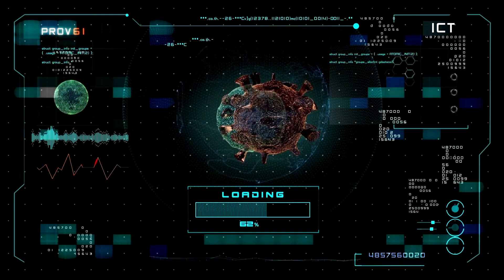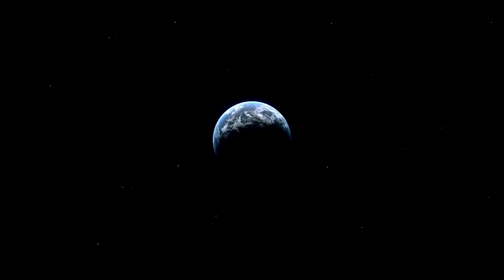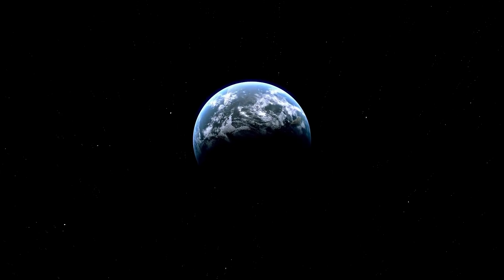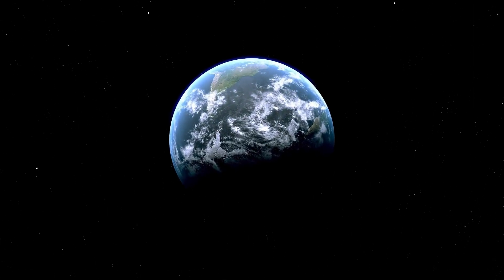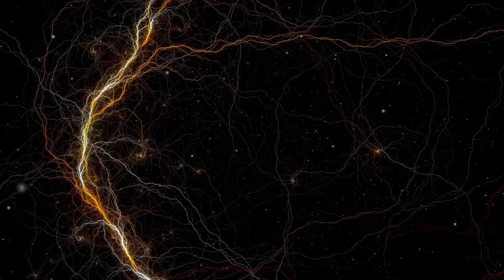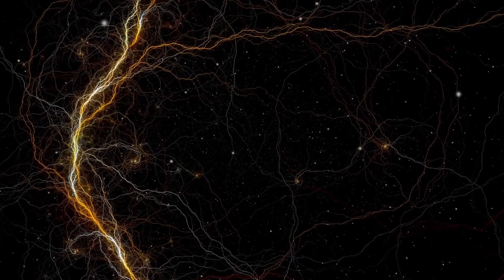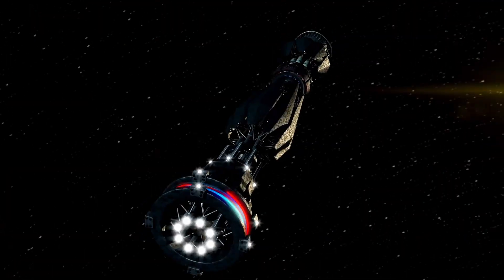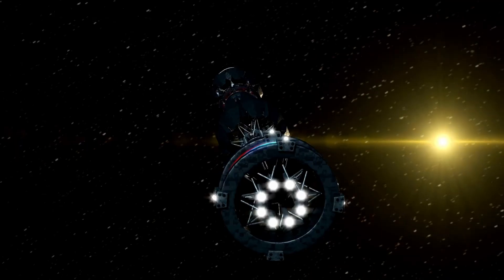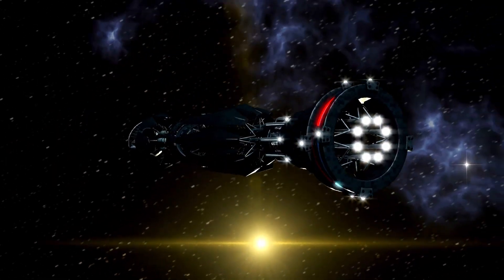The Voyager 2 team has skillfully managed the spacecraft's limited power supply by shutting down non-essential systems to preserve the most important scientific instruments. Operating with less power than a typical light bulb, Voyager 2 still makes monumental contributions to science.